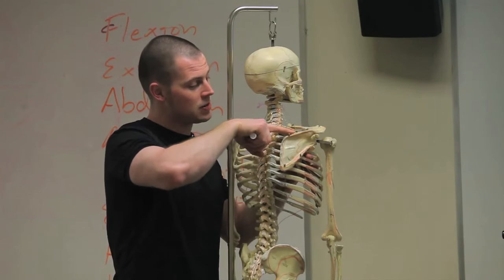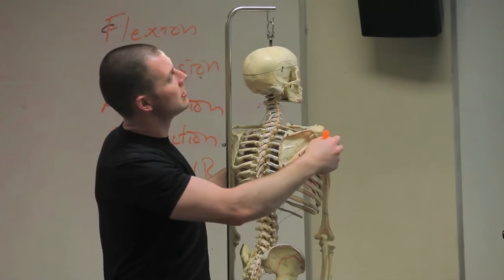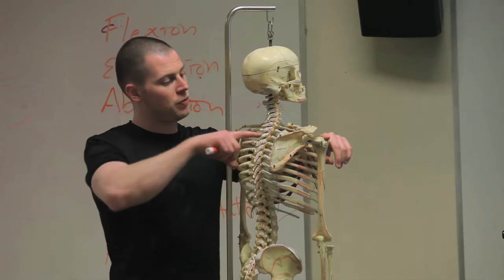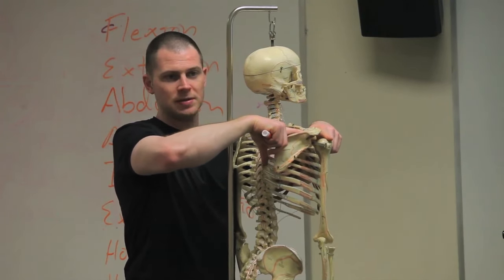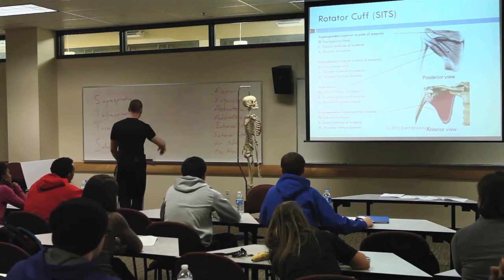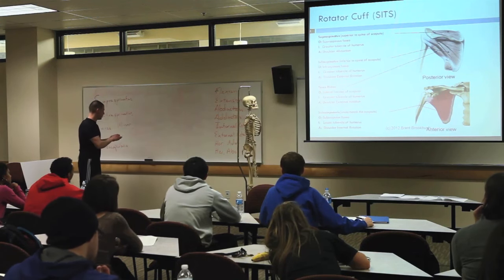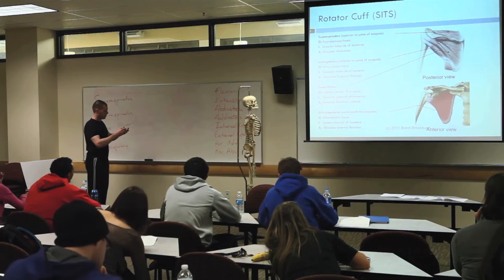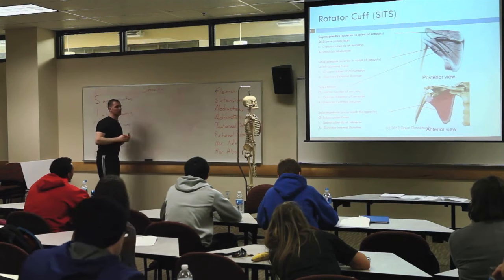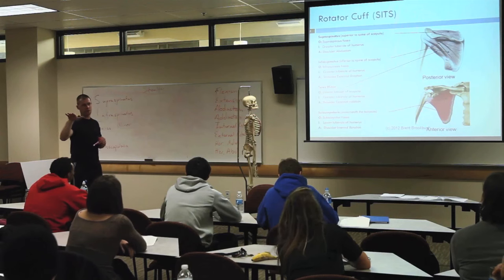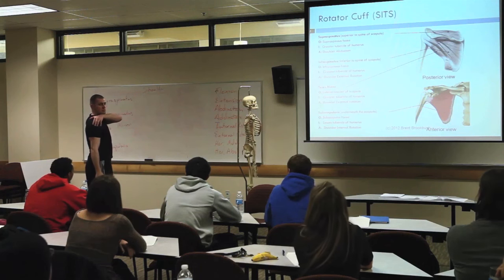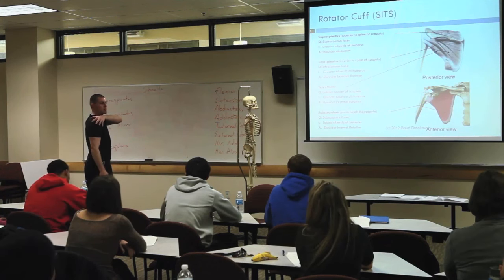Your supraspinatus runs in here, goes underneath your acromion process, and attaches into the greater tubercle of the humerus by running across the top. If it goes from the top of the scapula to the top of the humerus, what joint are we talking about? The shoulder - we're still using the same word bank. So what joint action does it contribute to? It's an abductor.